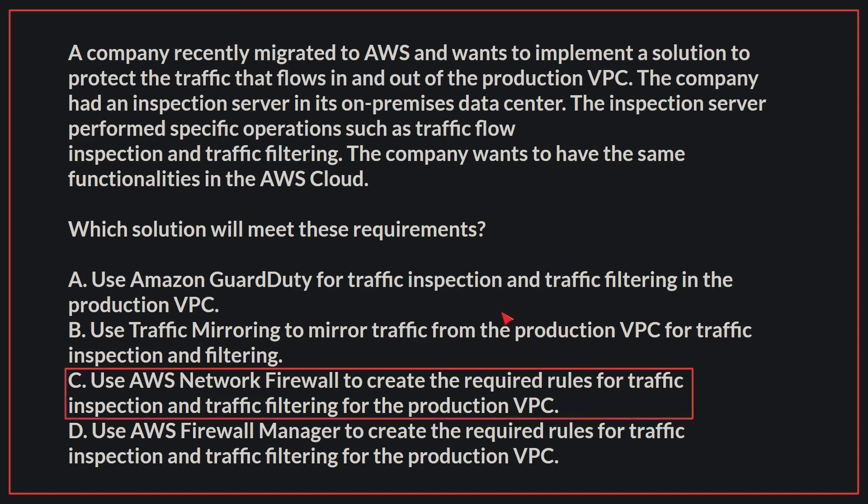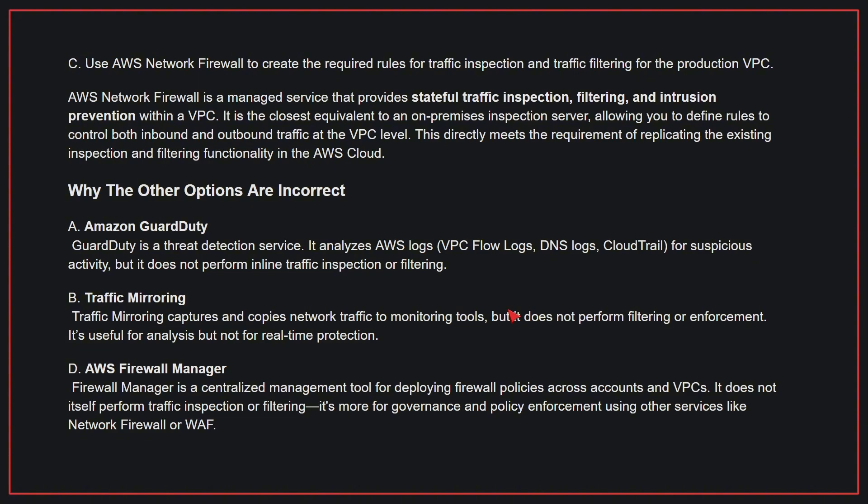The correct answer is C: Use AWS Network Firewall to create the required rules for traffic inspection and traffic filtering for the production VPC. AWS Network Firewall is a managed service that provides stateful traffic inspection, filtering, and intrusion prevention within a VPC. It is the closest equivalent to an on-premises inspection server, allowing you to define rules to control both inbound and outbound traffic at the VPC level, directly meeting the requirement of replicating the existing inspection and filtering functionality in the AWS cloud.